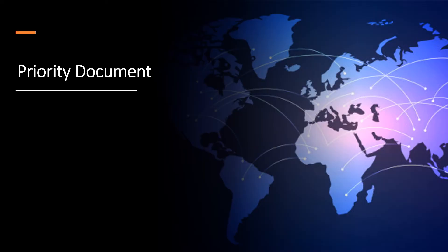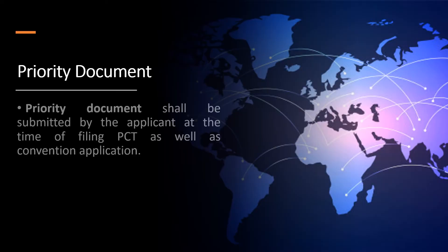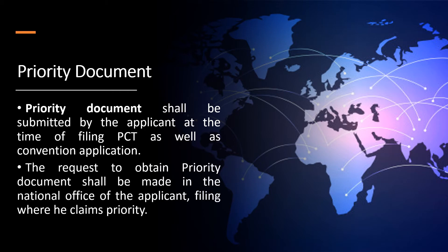Priority document shall be submitted by the applicant at the time of filing a PCT as well as a Convention application. The request to obtain the priority document shall be made in the national office of the applicant where he claims priority.